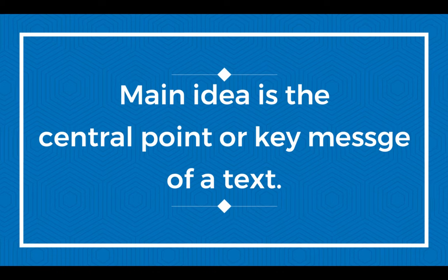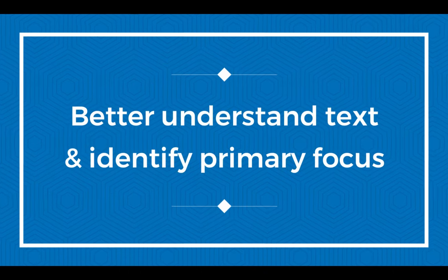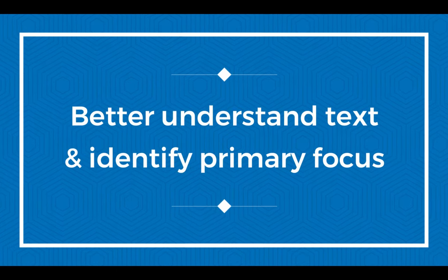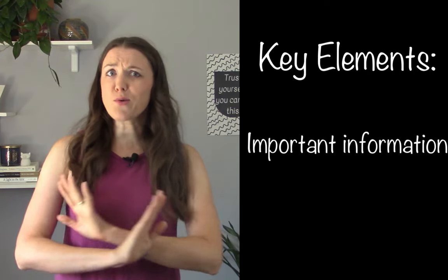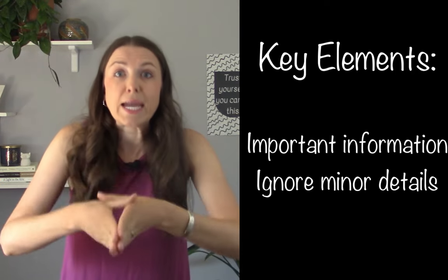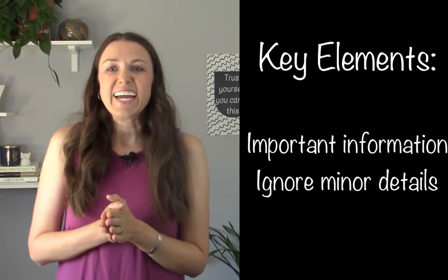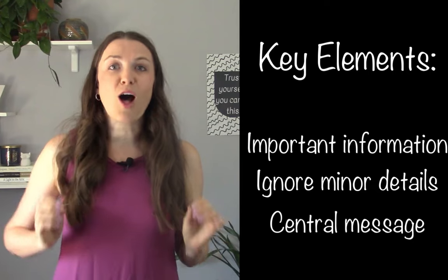A main idea is simply the central point or key message of a text. Basically, it is what the text is about. The purpose is really to help you have a better understanding of the text and to identify the primary focus. As you're looking for the main idea, there are a couple of key elements. First, look for the most important information. You're also going to want to ignore the minor details or supporting information, because we just want the main idea, not the supporting details. And then also, it will help you identify the central theme or message that goes along with the text.